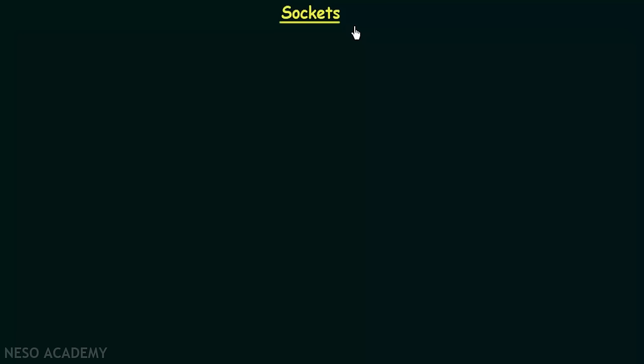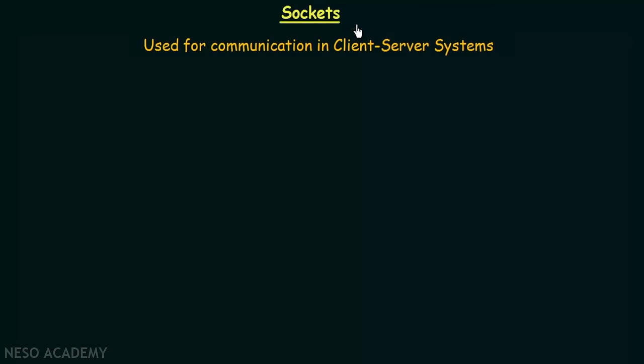In the previous lectures we studied about message passing systems and shared memory systems, which were two strategies used for communication between processes. These can also be used for communication in a client-server based system. In this lecture we will be studying about sockets, which is also a strategy used for communication between processes and is mainly used for client-server based systems.